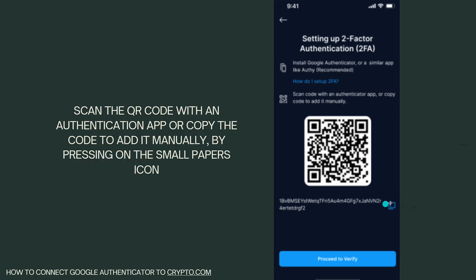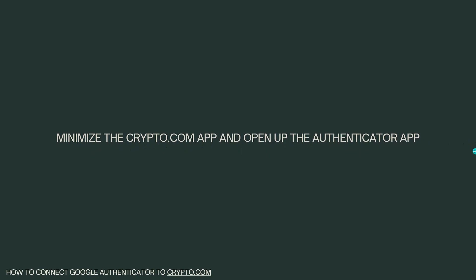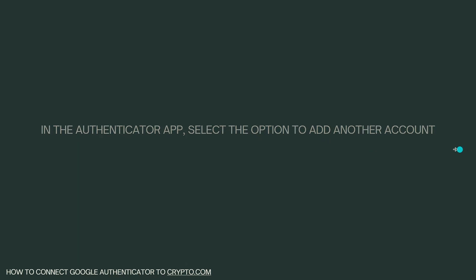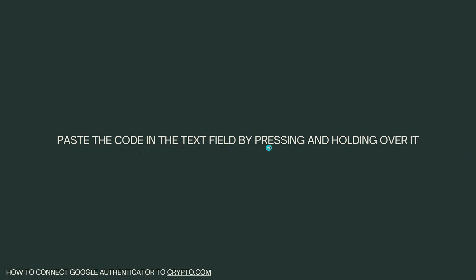Minimize the Crypto.com app and open the Authenticator app. In the Authenticator app, select the option to add another account — you can go ahead and pause this video so that you can follow these steps. Now choose the option to enter manually the secret key, then paste the code in the text field by pressing and holding over it.